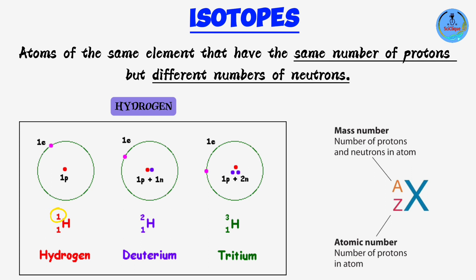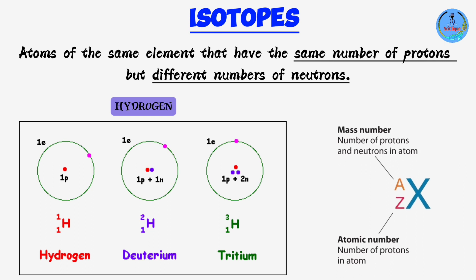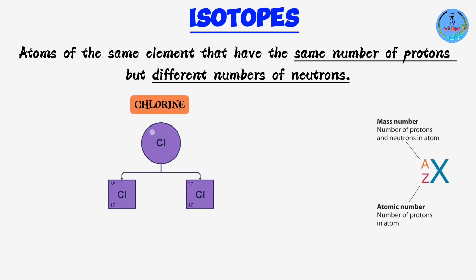Protium has a mass number of 1 (1 proton + 0 neutrons), deuterium has a mass number of 2 (1 proton + 1 neutron), and tritium has a mass number of 3 (1 proton + 2 neutrons). All three are still hydrogen because it's the number of protons that determines the element. Hydrogen therefore has three isotopes, which differ in the number of neutrons.